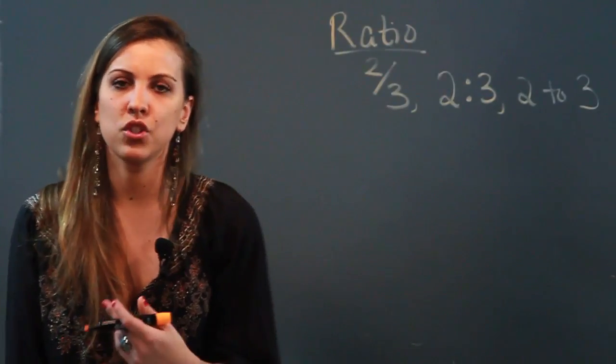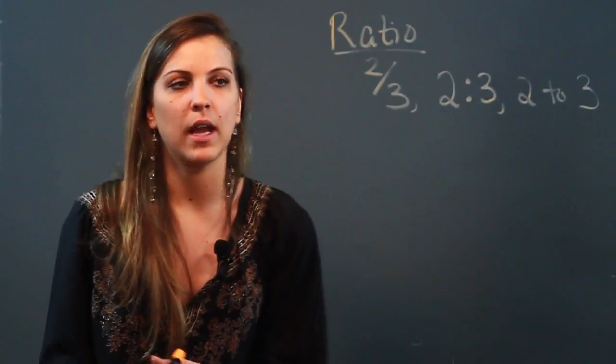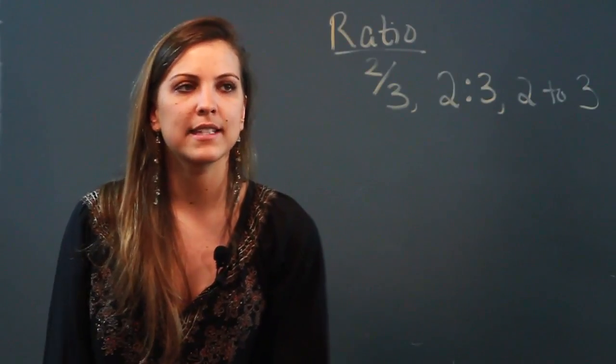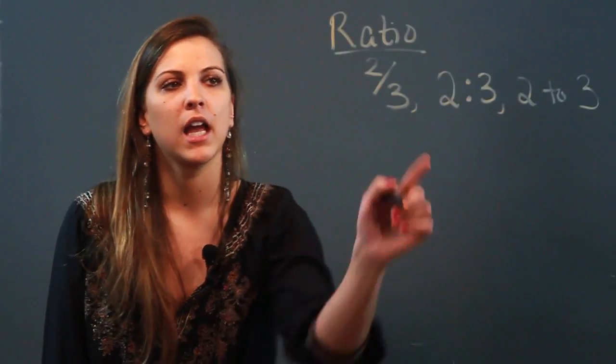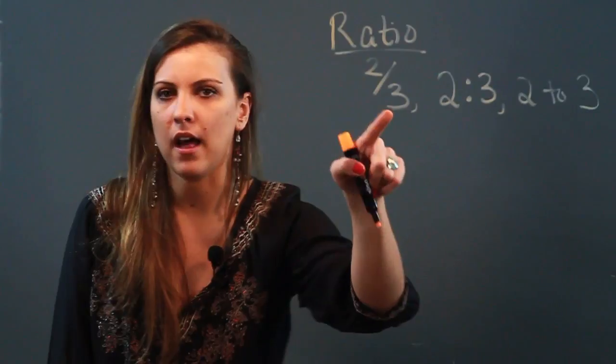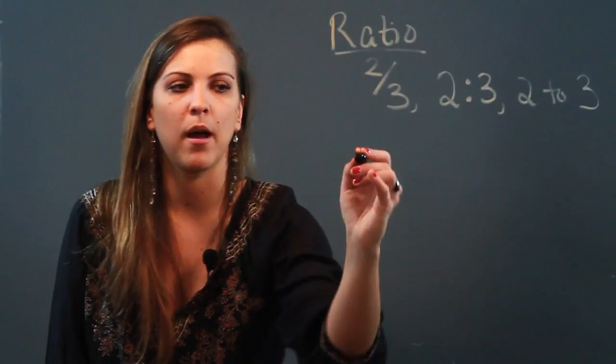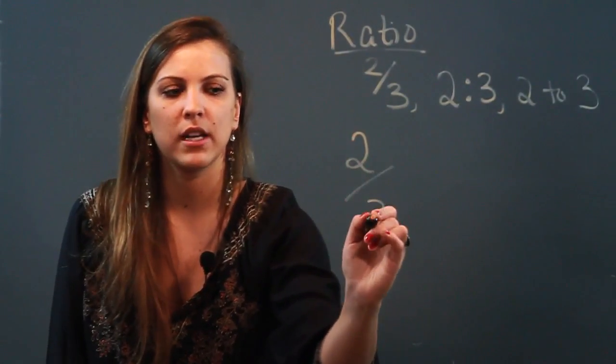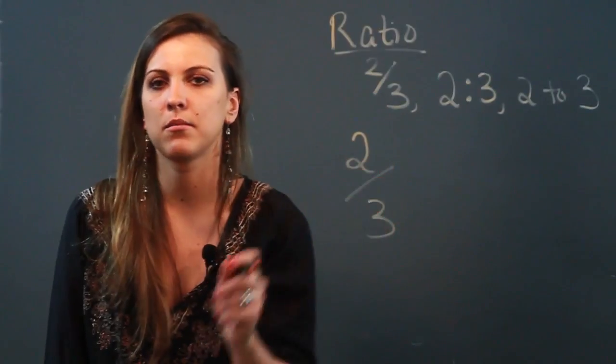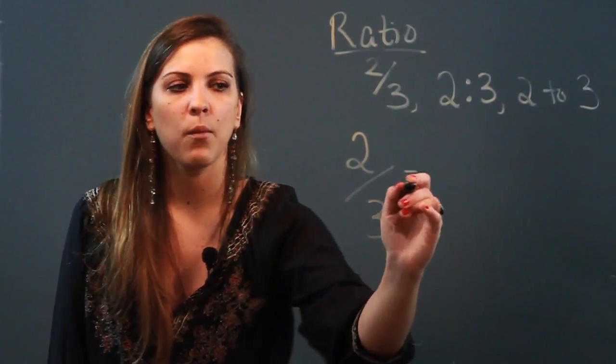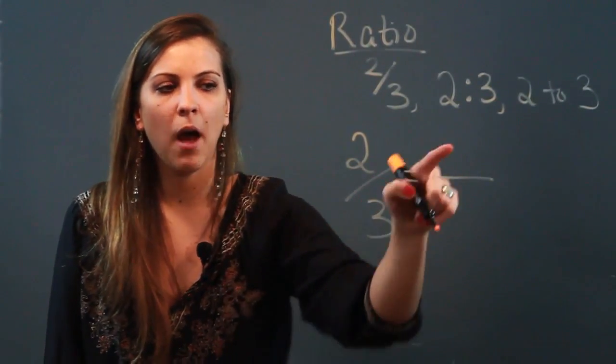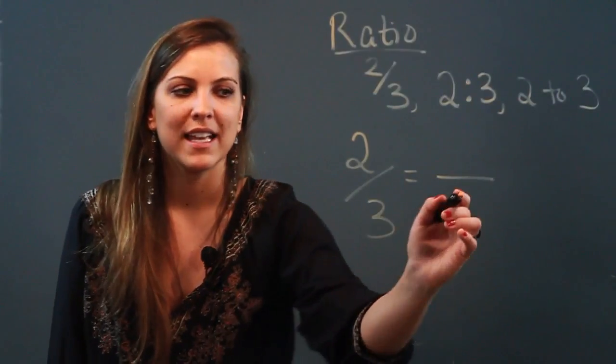A proportion is two equal ratios. So for example, let's say I tell you that I can buy two bags of chips for $3. That's what this ratio would mean in a word problem. So two bags of chips cost $3. That's my comparison, that's how these numbers are related. And now I want to know how many bags of chips can I buy for $6.